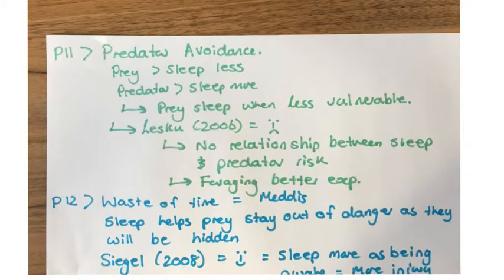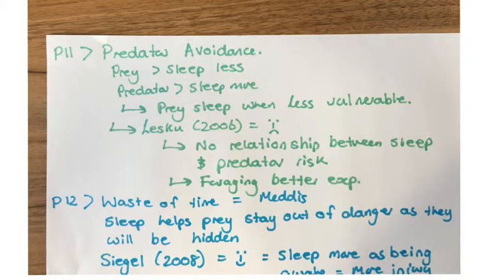In paragraph eleven, we look at predator avoidance — prey sleep less, predators sleep more. Prey can't afford to sleep for very long as they need to maximise time foraging for food and ensure they are less vulnerable. Prey tend to sleep when they are least vulnerable, such as at night when predators may be less active. However, Lesky in 2006 provides contradictory evidence, stating there is no relationship between sleep and predator avoidance, meaning another explanation such as foraging requirements may be better.